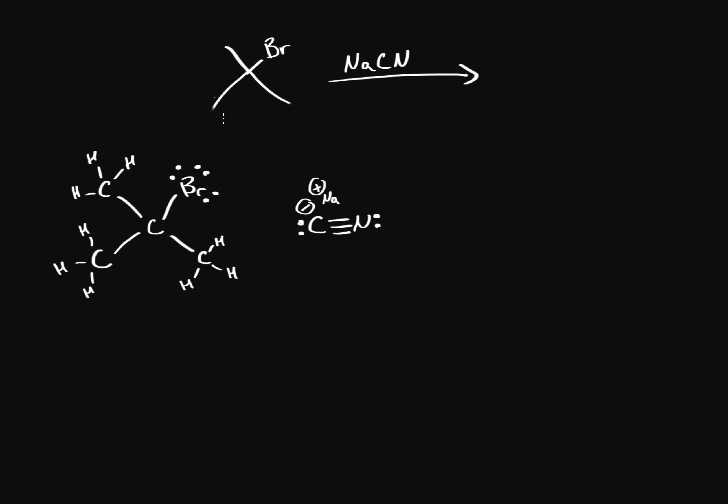Now what happens if it's hindered but the strong nucleophile is not a strong base? What if it's just a strong nucleophile? It can't act like a base, so what is it going to do? Well, we get something called the SN1 mechanism and this mechanism is two steps.